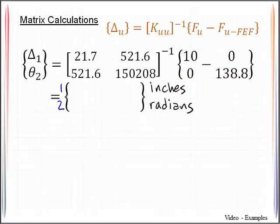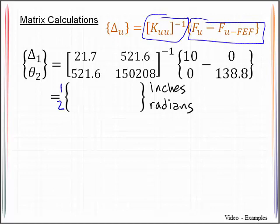We can now carry out the matrix operations to find the joint displacements. So we take the inverse of the K U U matrix and multiply it by the F sub U minus the F sub U F E F vector. That's what we are seeing here, which will produce the following values: negative 0.4778 inches and a positive 0.0007 radians.